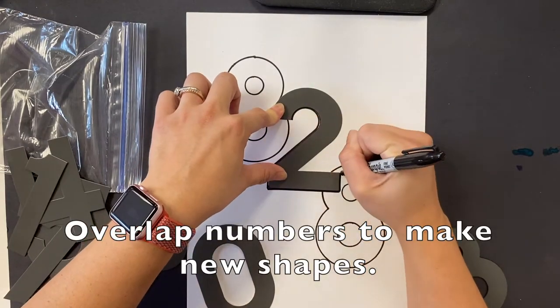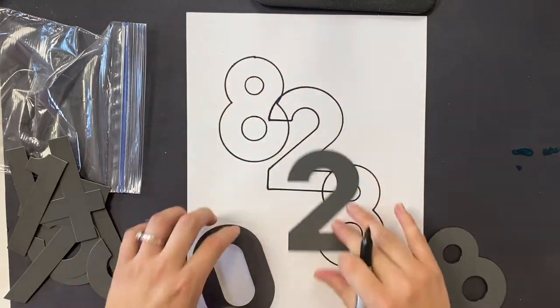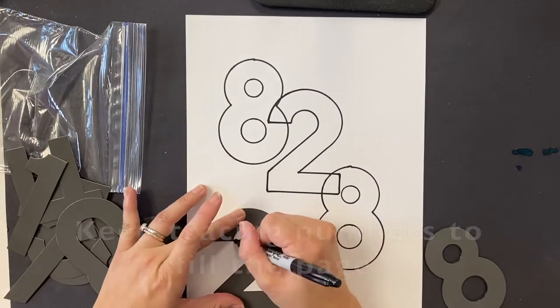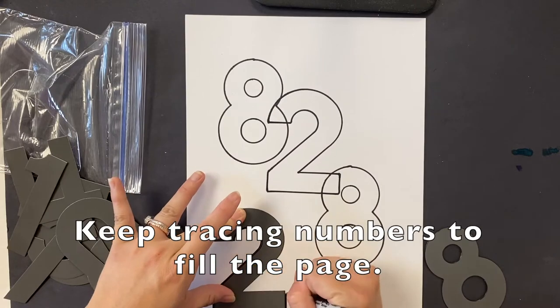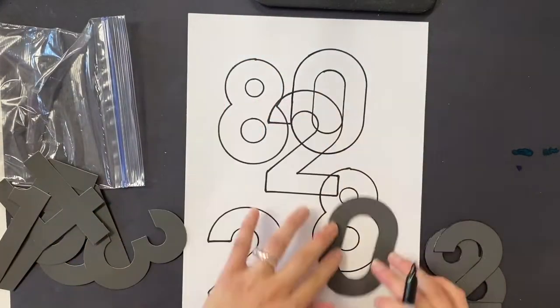When I put this 2 on top of the 8s, after I pick up my number, I have little shapes where they overlapped. Keep tracing all different numbers all over your page until you have filled it up.